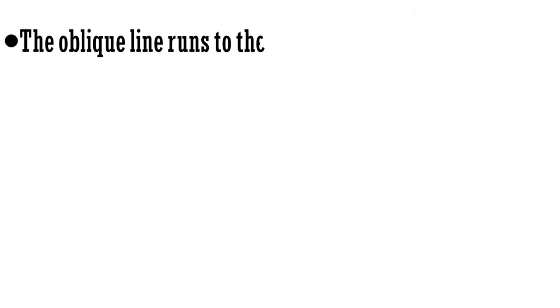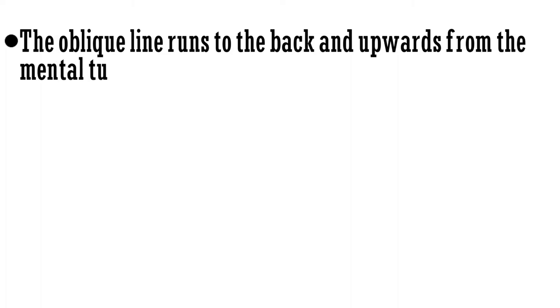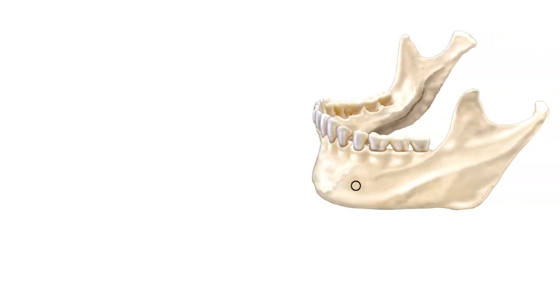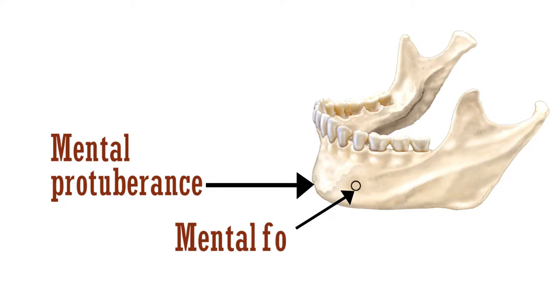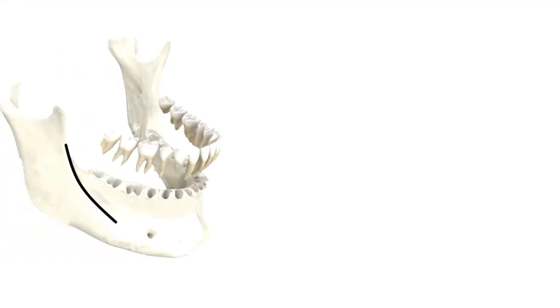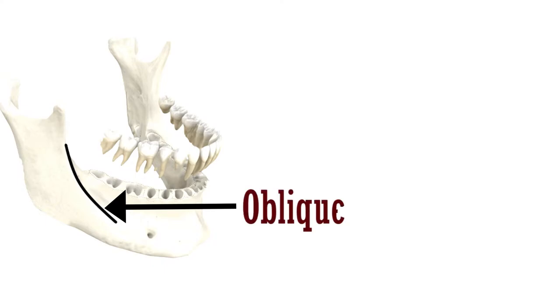The oblique line runs backwards and upwards from the mental tubercle. Let's have a look. As you can see, this is the mental protuberance, or the chin. Here the mental foramen is present, which transmits the nerves and vessels. This marked line is the oblique line, which runs upwards and backwards from the mental tubercle.